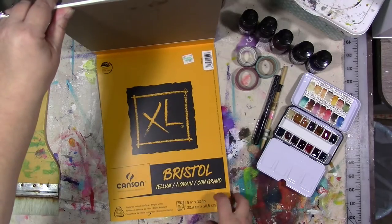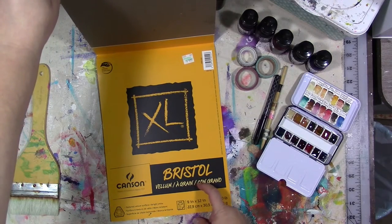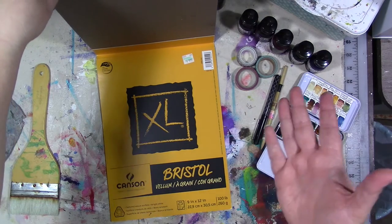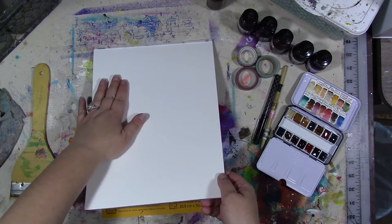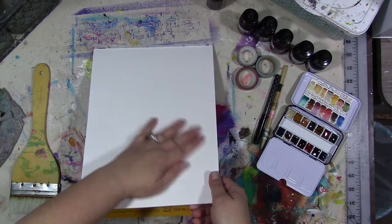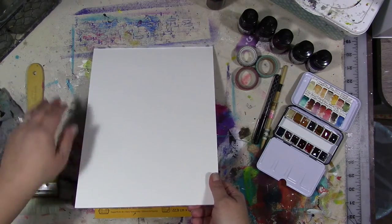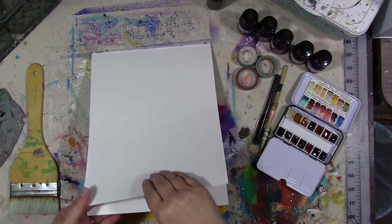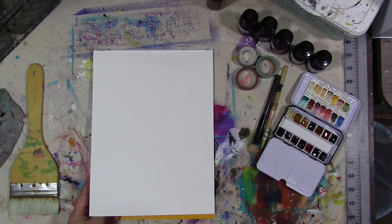I have some Bristol paper here, this is Bristol vellum, 100-pound Canson XL paper. As I've said before, when I've done things that I'm going to scan, I like to use a smooth surface paper, hot press watercolor paper, or Bristol vellum, both of which have a very smooth, non-textured surface so that the texture of the paper doesn't interfere with the artwork when I scan it.